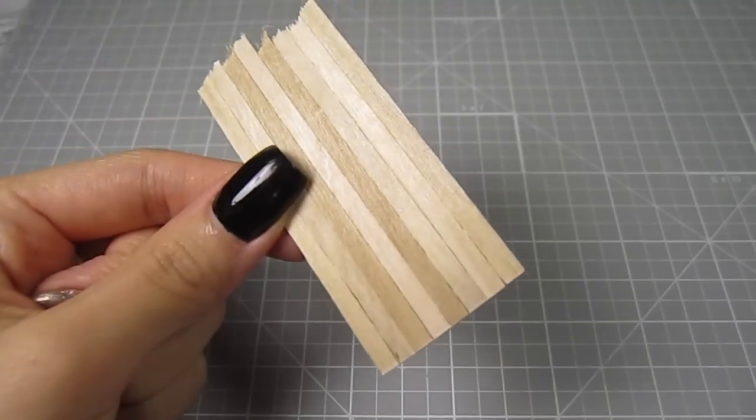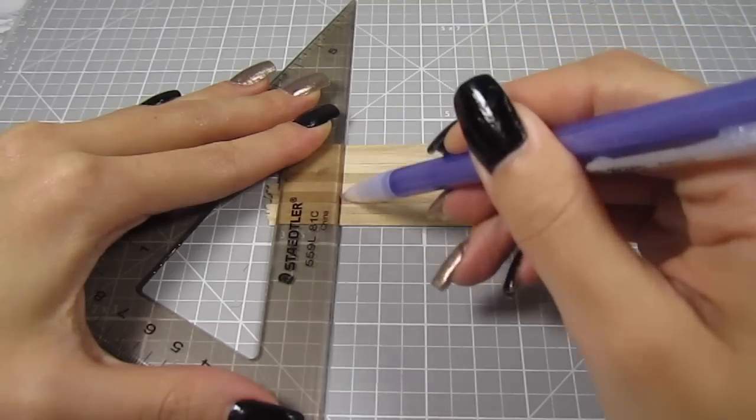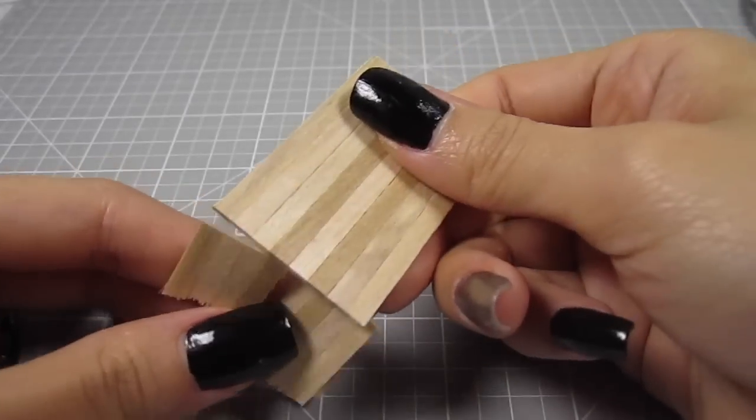Once all those pieces are glued together, draw a line straight down at the 2 inch mark. Cut off the excess wood. This rectangle will be the tray.